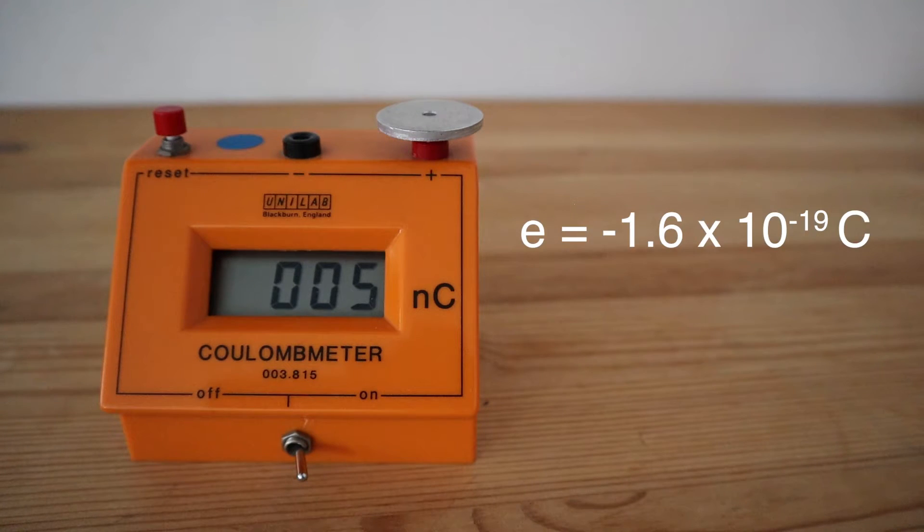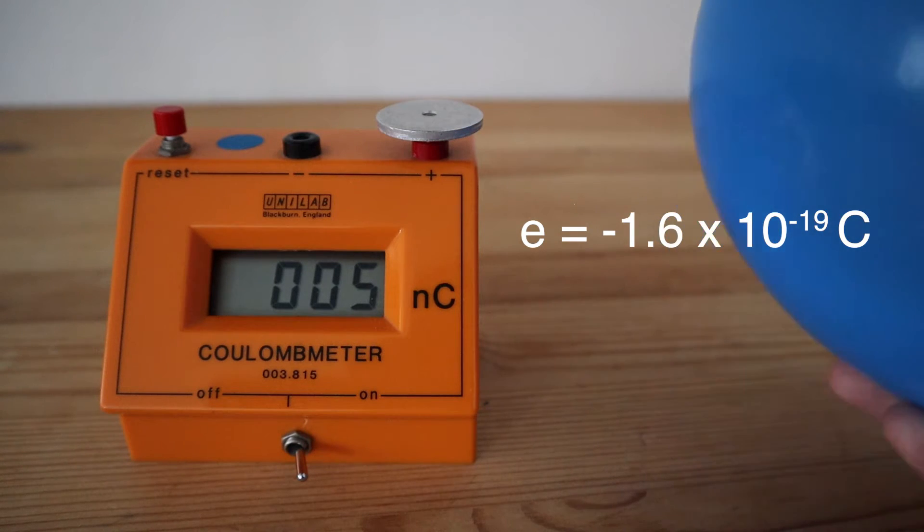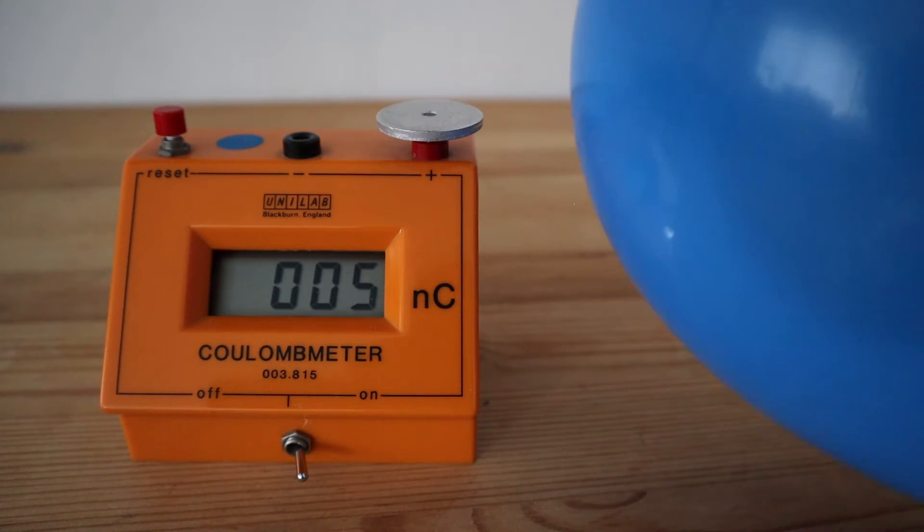If one electron carries 1.6 times 10 to the minus 19 coulombs, how many electrons have been given to the coulomb meter by the balloon?